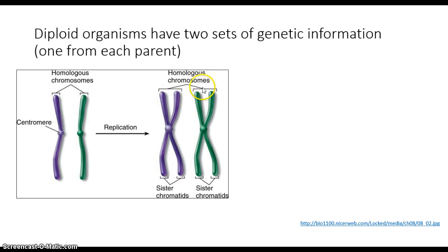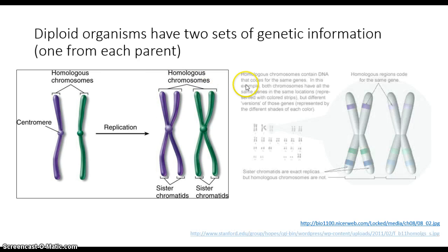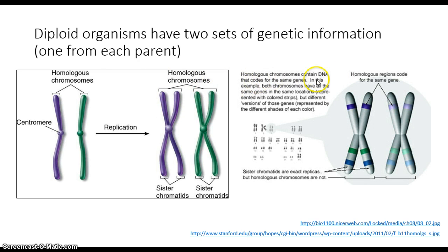These homologs — their relationship can be summarized like this: they contain information for the same characteristics. These two chromatids are identical to each other, and these two are identical to each other. But the relationship between this purple and this purple is that they may carry information for the same characteristics, but the information they have is different because one comes from your mother and one from your father — they have different DNA to begin with.